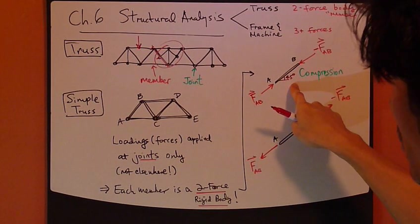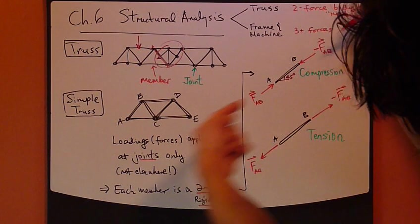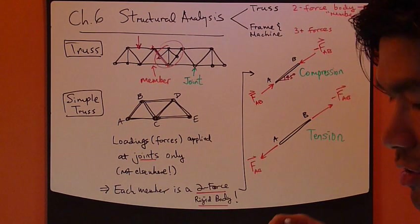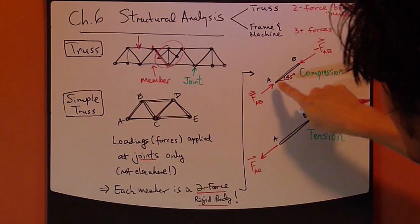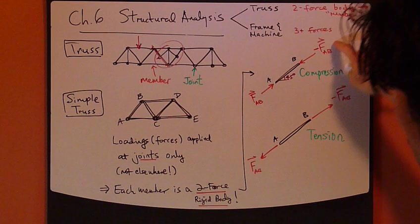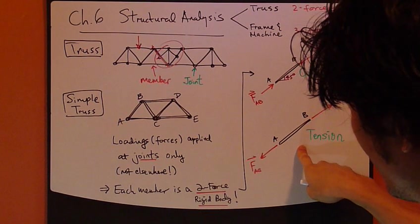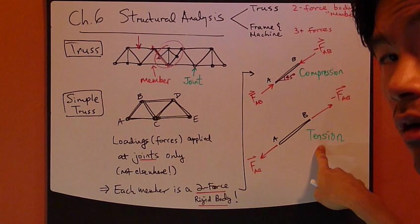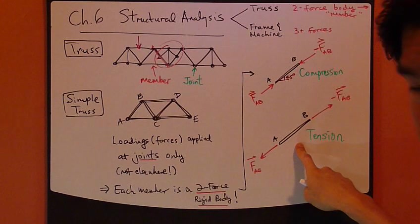And this case is called compression loading, where both of these forces are acting toward each other, creating a tendency to compress this member AB. That's why this force FAB is called compressive force. This bottom picture shows that this force AB is a tensile force. So this member AB is under tension.